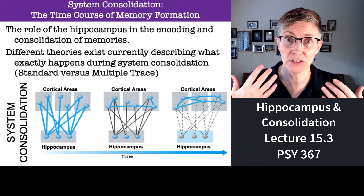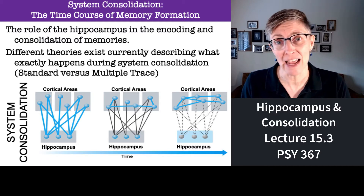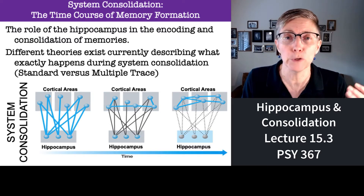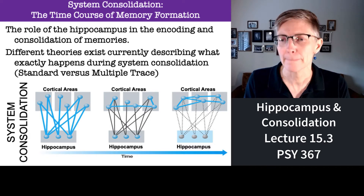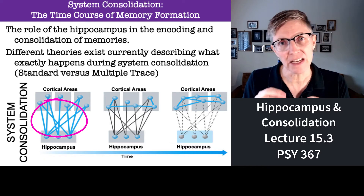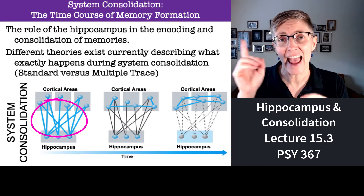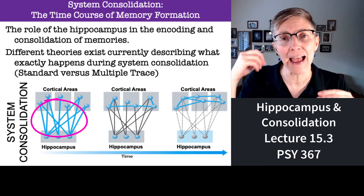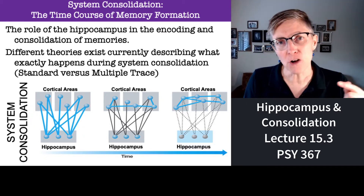In fact, the hippocampus is necessary for the formation of new memories — if you don't have a hippocampus, like patient H.M., you don't form new explicit memories. When you first learn something, there are a lot of connections between that new information in the hippocampus and activity in the different cortical areas where that information is eventually going to be stored.